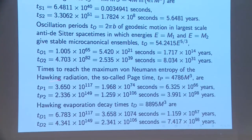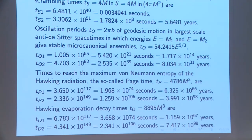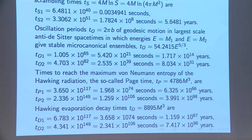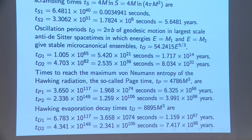The time to reach maximum von Neumann entropy — what some call the 'page time' — is about six times 10 to the 66 years for a solar mass black hole, and about four times 10 to the 98 years for the supermassive one. The Hawking evaporation time is about twice those values: 10 to the 67 years for the solar mass, and almost 10 to the 99 years for the supermassive black hole.